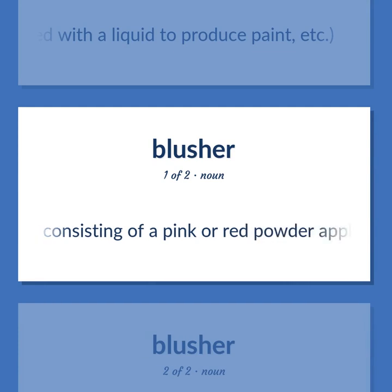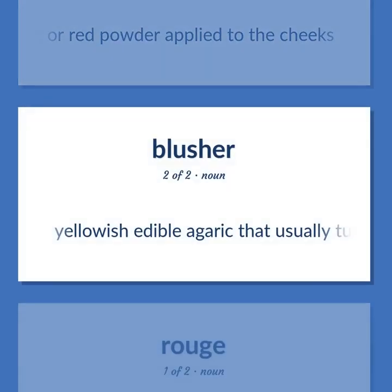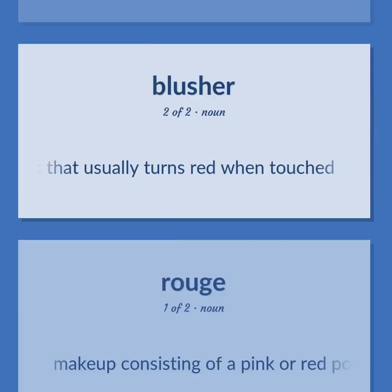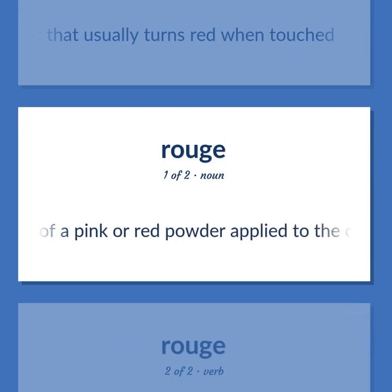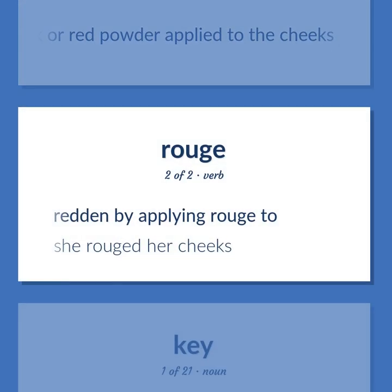Makeup consisting of a pink or red powder applied to the cheeks. Yellowish edible agaric that usually turns red when touched. Makeup consisting of a pink or red powder applied to the cheeks. Redden by applying rouge to. She rouged her cheeks.